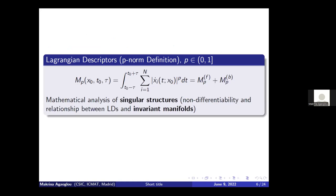There are other versions to calculate the Lagrangian descriptors. The one I will use here is known as the p-norm definition. When we calculate trajectories, we accumulate the p-norm of the vector field along each trajectory. This alternative definition has a very nice property: the invariant manifolds — stable and unstable — are located at the points where the scalar function is non-differentiable. This allows us to use features similar to those used in digital image processing, like edge extraction, to extract manifolds from the scalar field.